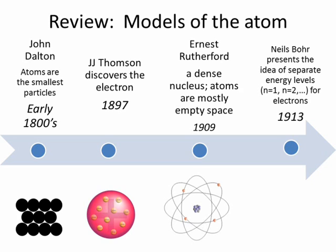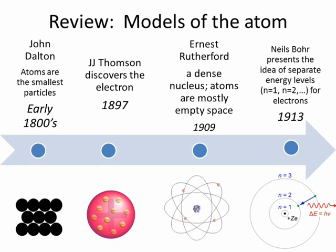Niels Bohr in 1913 proposed that not only did the electrons orbit a dense nucleus, but they were also only allowed to exist in certain separate orbits or energy levels. He named them 1, 2, 3 — so you see n equals 1, n equals 2, n equals 3.